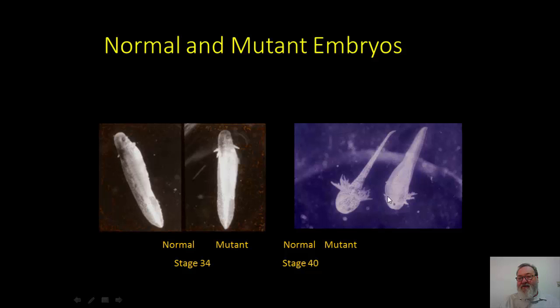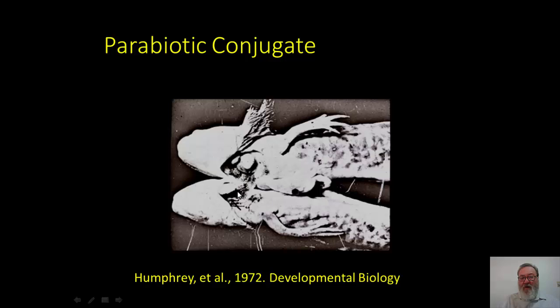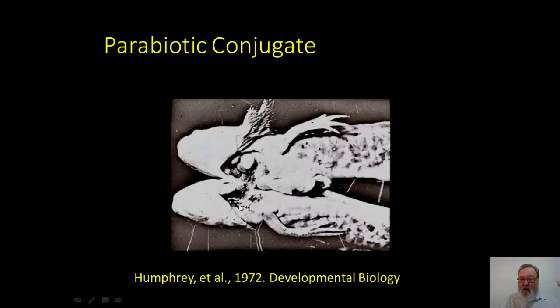After another three weeks, a mutant is shorter, has microcephaly, poorly developed gills, and shows ascites — all secondary defects from an absence of circulation. This was shown by Dr. Rufus R. Humphrey back in 1972 by linking a normal and mutant sibling parabiotically, joining their blood supplies so the normal circulation would keep the mutant alive. The mutant was able to grow basically into adulthood. What this demonstrated was that all other features of the body were normal; only the heart failed to beat.